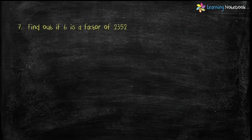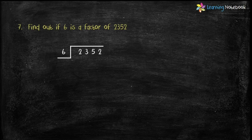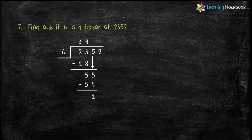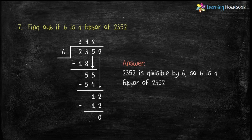Next question: find out if 6 is a factor of 2352. Let's divide and see if the remainder is 0. 6 × 3 = 18, 23 − 18 = 5; bring down next digit: 55. 6 × 9 = 54, 55 − 54 = 1; bring down next digit: 12. 6 × 2 = 12, 12 − 12 = 0. Remainder is 0, therefore since 2352 is divisible by 6, 6 is a factor of 2352. Students, you can find the factors of any given number using multiplication or division.